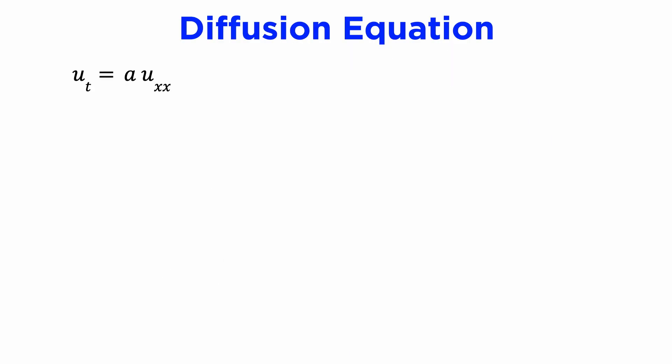In the previous tutorial, we solved the diffusion equation u_t equals a times u_xx, and using separation of variables.